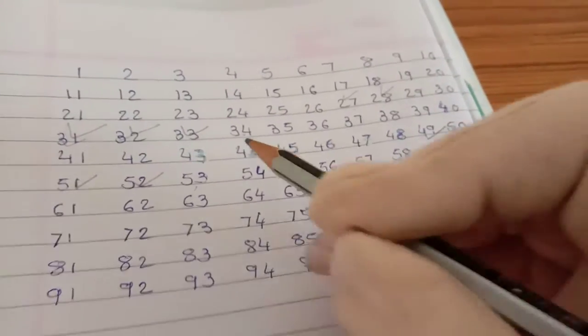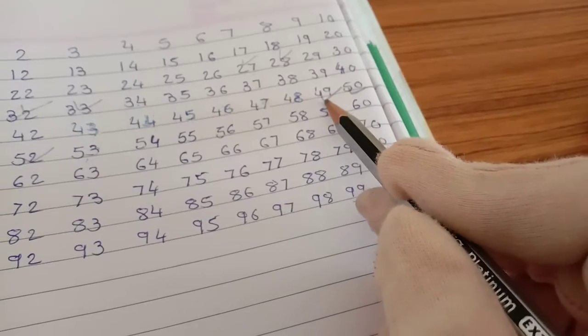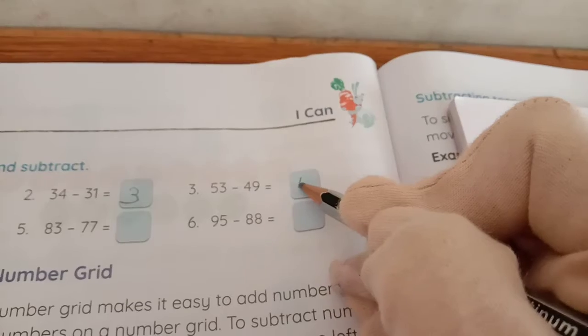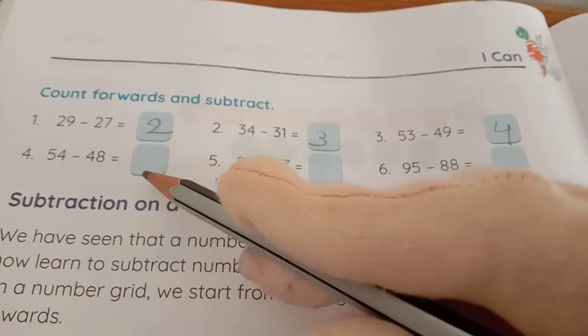So how many steps we have to go? 1, 2, 3, 4. So answer will get 4. 53 minus 49, so answer will get 4.